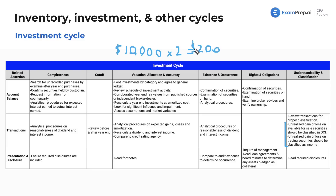Now, what are we going to deal with for valuation, allocation, and accuracy for the balance of investments? This is pretty important — making sure that the investments you have, the stocks and bonds you're holding as an investment, are properly valued, allocated, and accurate. You want to foot investments by category and agree to the general ledger. Review the schedule of investment activity.